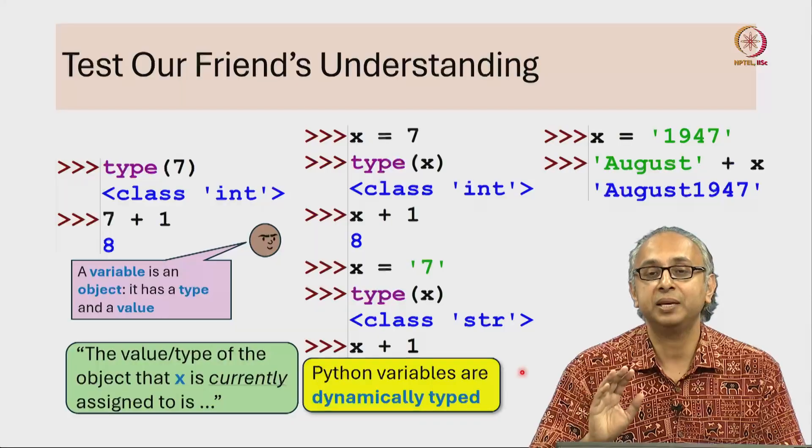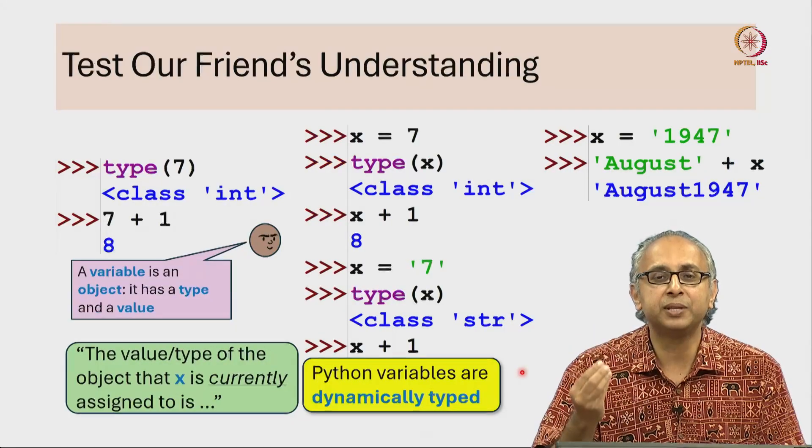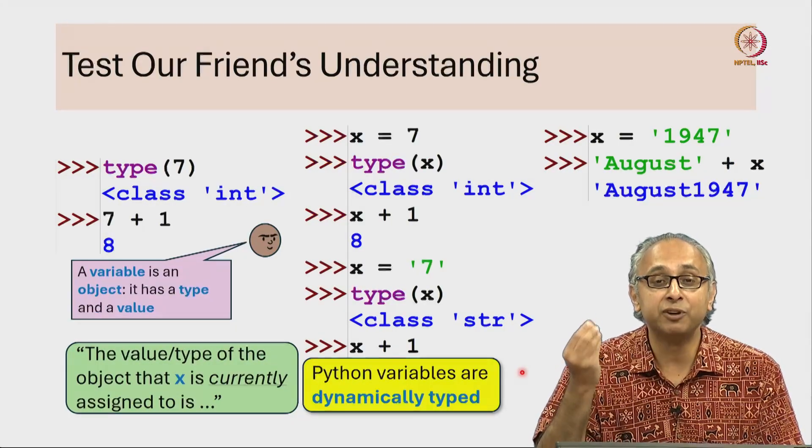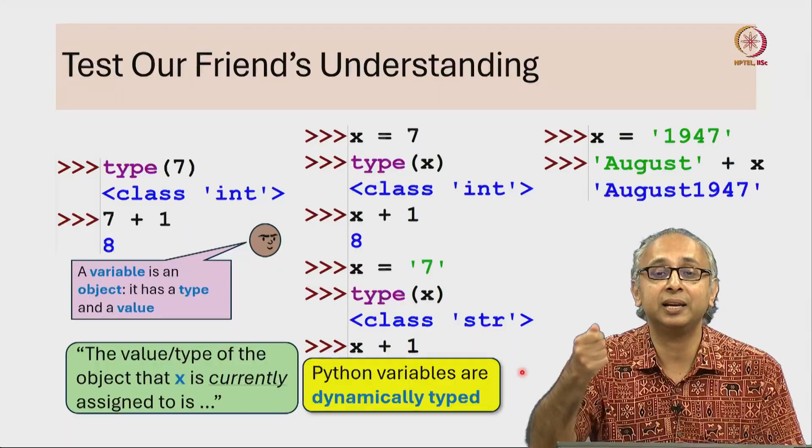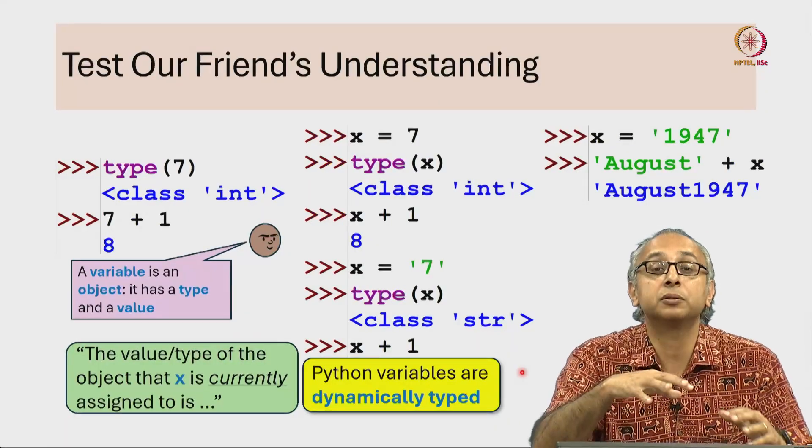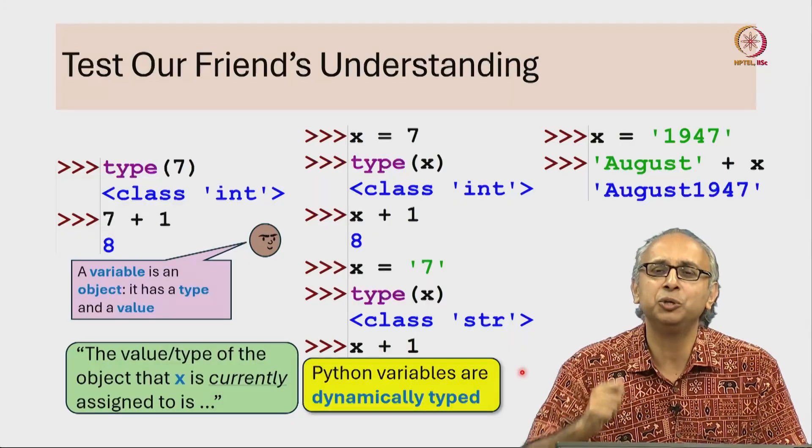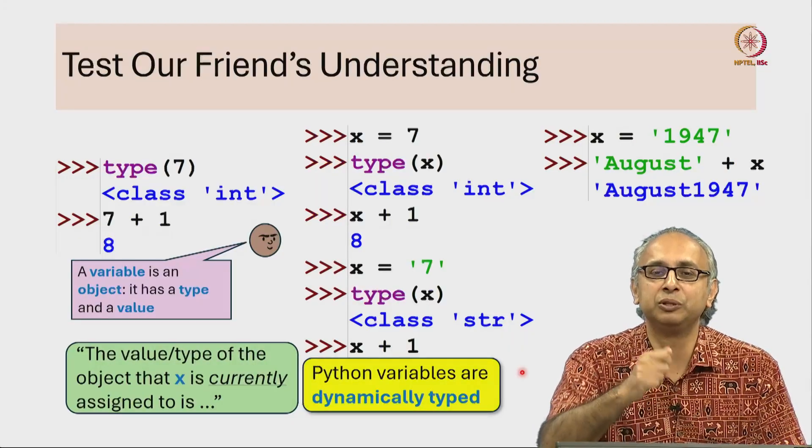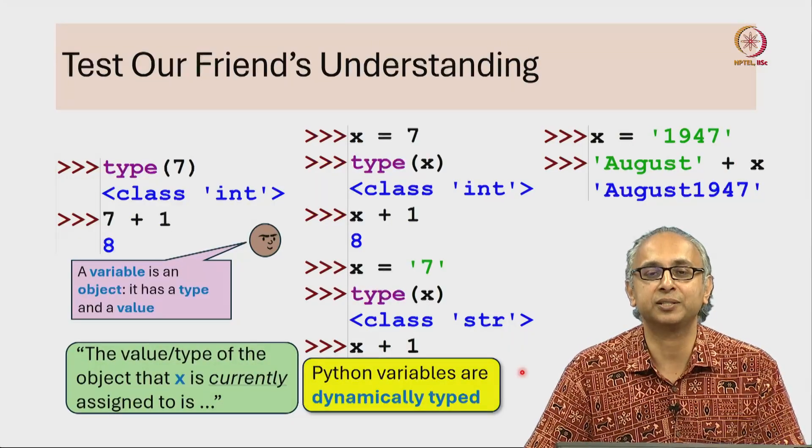Python however, is dynamically typed. In fact, keep this metaphor in mind that a variable is just like a label. You can move it from one suitcase to another. It doesn't care what type of suitcase it is, you can attach the label to different types of objects. That's what dynamic typing is.